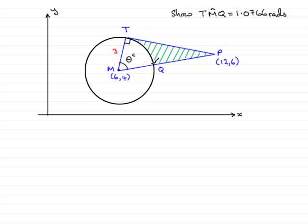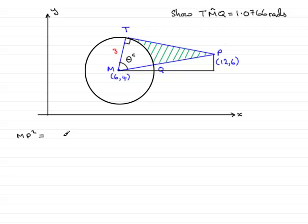So first of all, I need to work out the length MP. To do that, I've got to think of a right angle triangle drawn through here and apply Pythagoras' theorem to find the distance between the two points M and P. By Pythagoras' theorem, MP squared — the hypotenuse squared — is equal to the sum of the squares of the other two shorter sides. That's the difference between the x-coordinates, 12 take 6, all squared, plus the difference between the y-coordinates squared, 6 take 4, all squared.